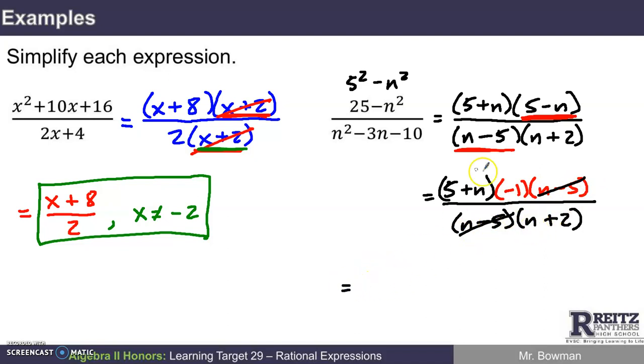And with everything else not factoring out, I can write what I've got. It probably would make sense to multiply this negative 1 into the 5 plus n. Let's write something like negative 5 minus n over n plus 2. Oh yeah, and what value should we say n can't be? Well, n can't be 5 and n can't be negative 2.